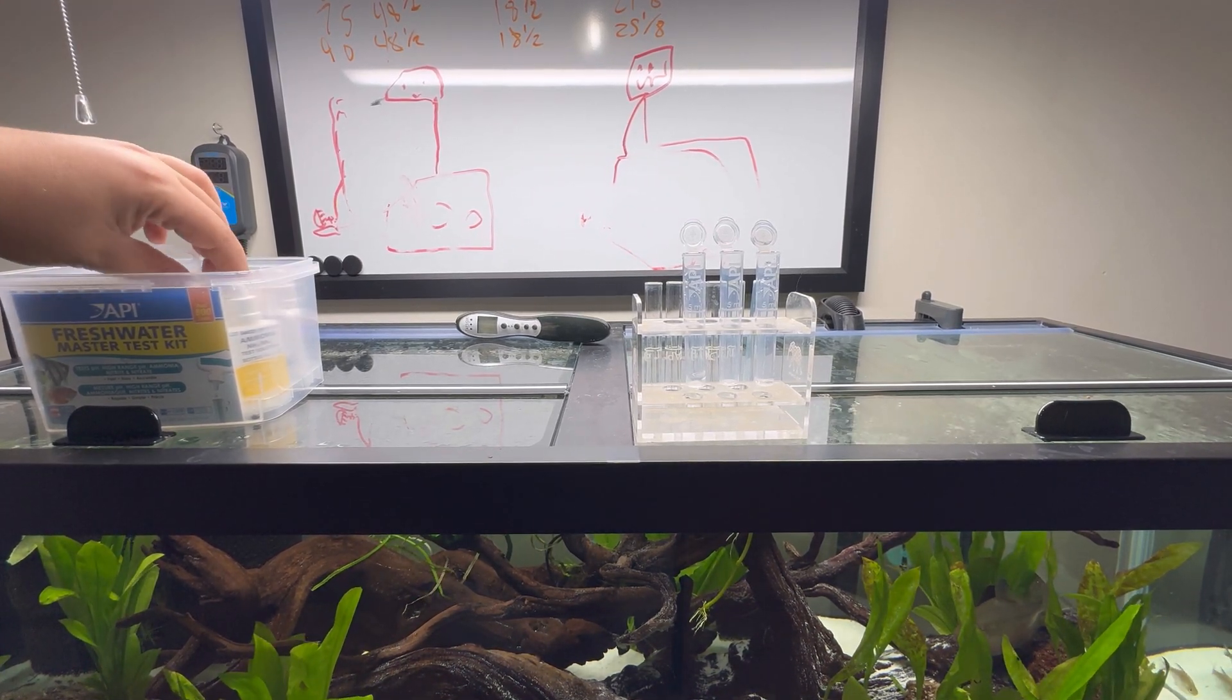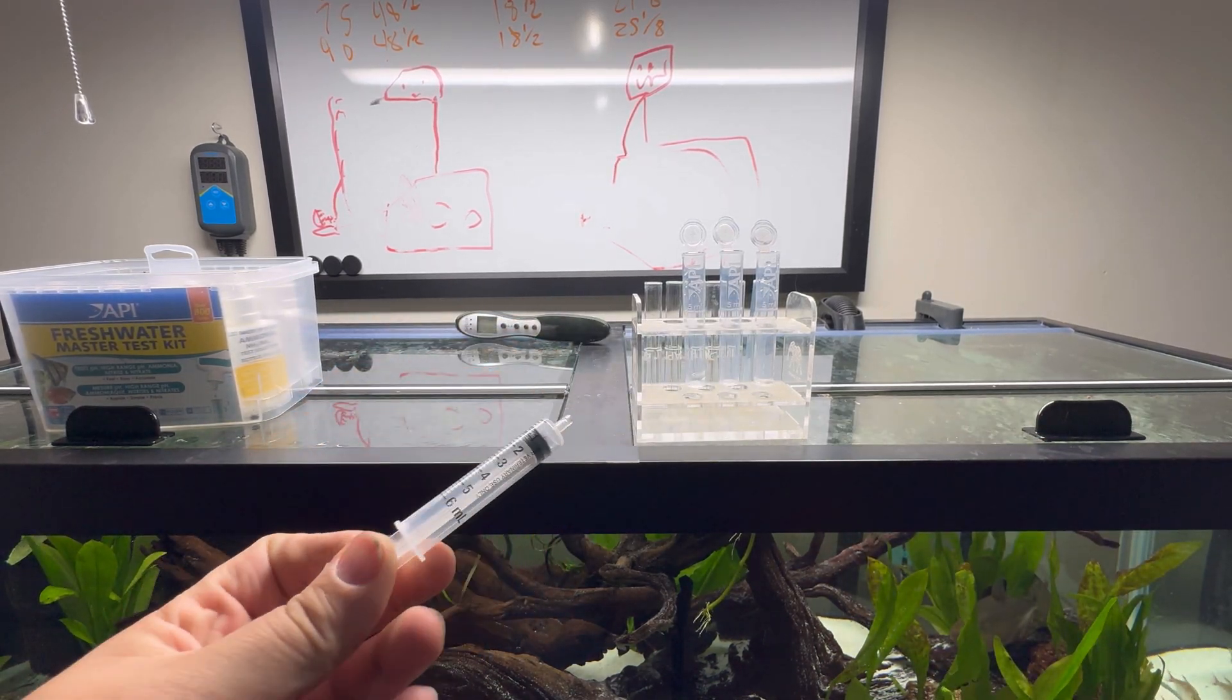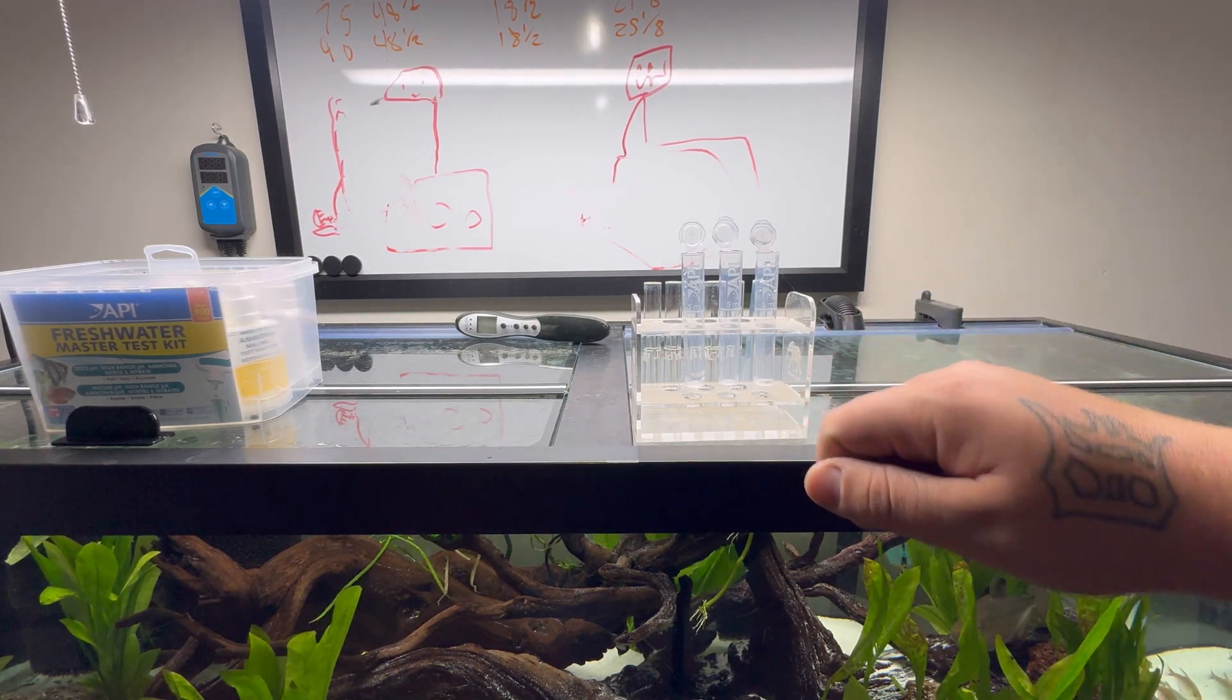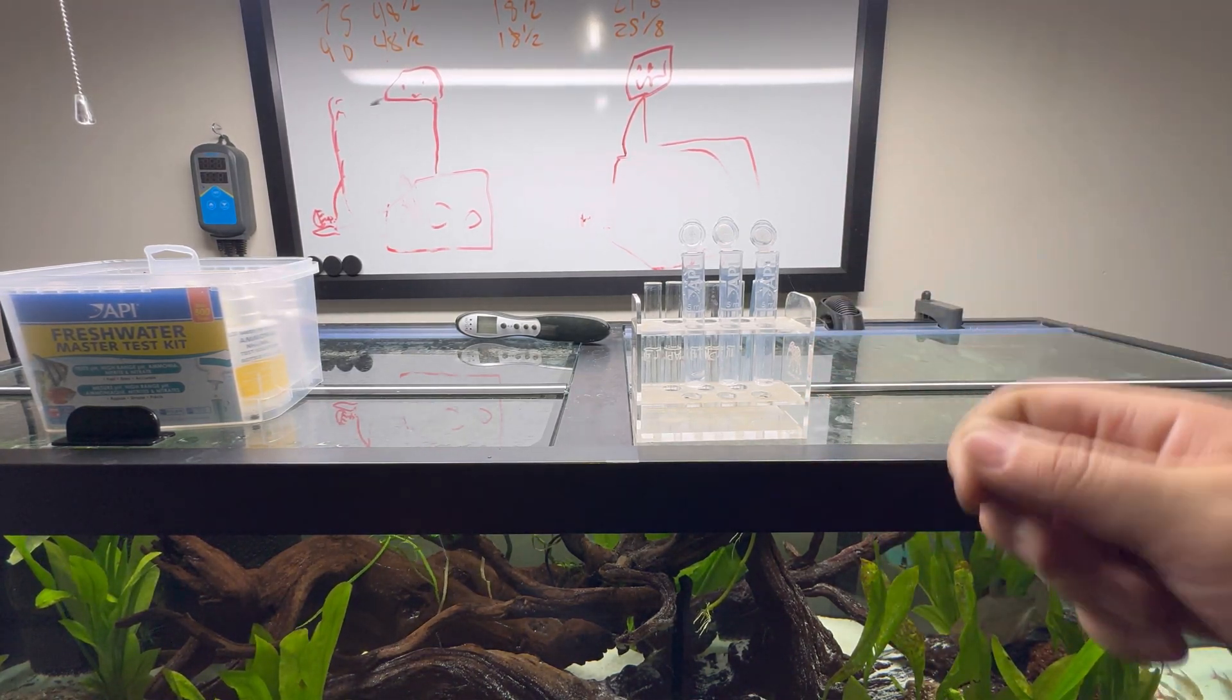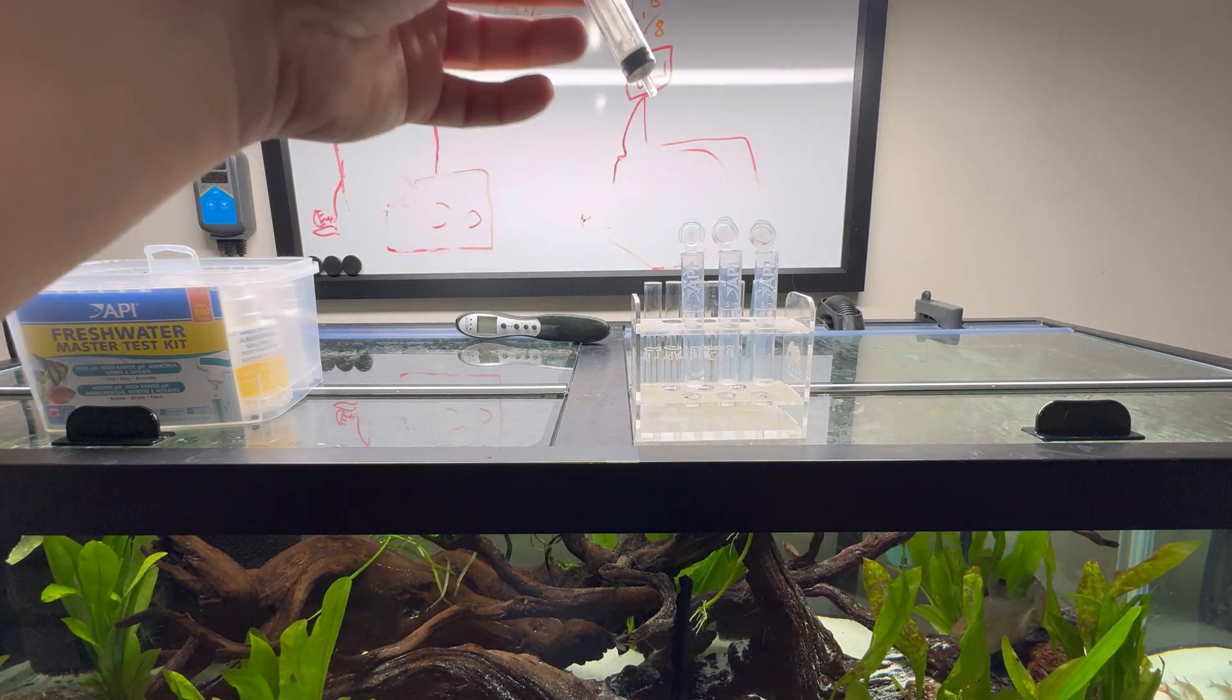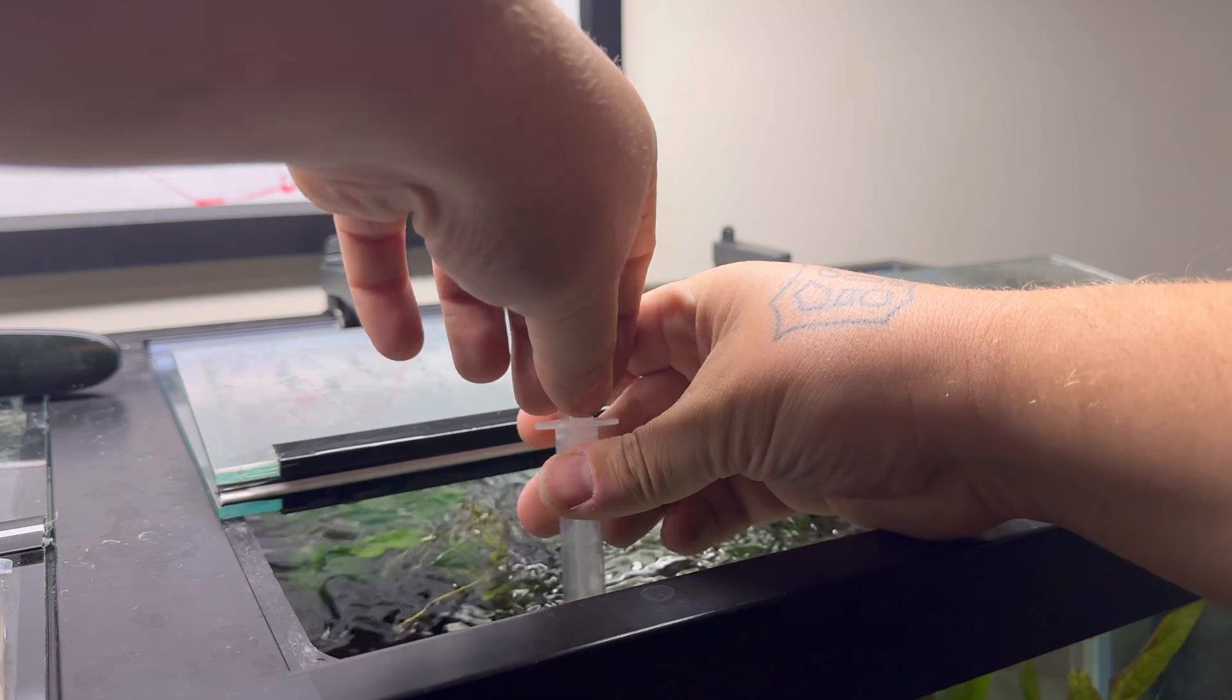The first thing I want to mention: get yourself a syringe. This is going to help a lot in filling these vials. Instead of dunking them in the tank and constantly trying to get that level to five milliliters, you're going to be able to do that way easier using a drop-by-drop method. We're just going to suck up a vial of this.